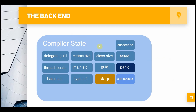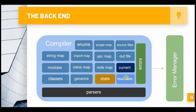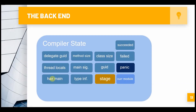So our compiler state consists of a couple things: whether or not our compiler succeeded or failed - just two booleans. The total amount of classes we have, the total amount of methods we have, delegate GUID for delegate functions (a way to delegate work to another object). You also want to keep track of how many thread locals you have - my language supports thread locals. Whether or not we have a main method - though this is kind of redundant since you could just check if the main method pointer is null.